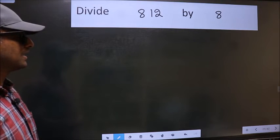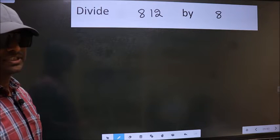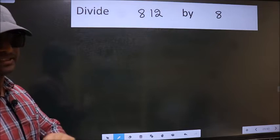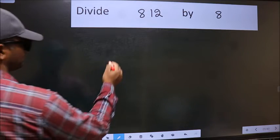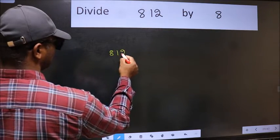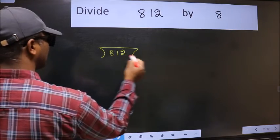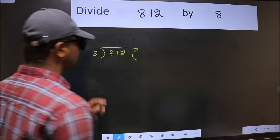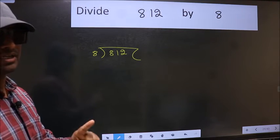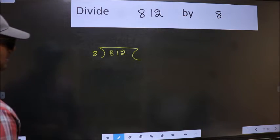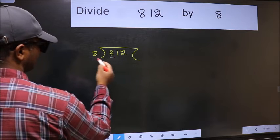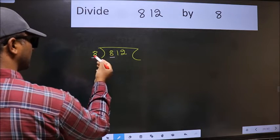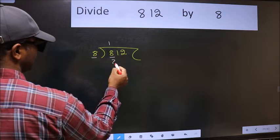Divide 812 by 8. To do this division, we should frame it in this way: 8 goes into 812. This is step 1. Here we have 8 and 8. When do we get 8 in the 8 times table? 8 times 1 equals 8.